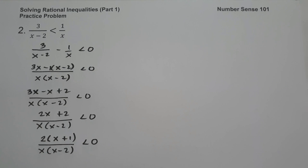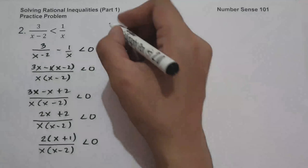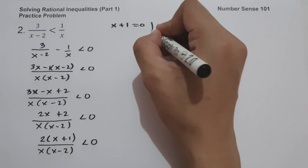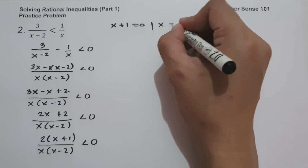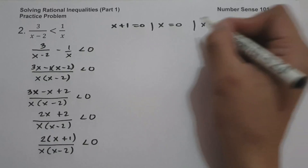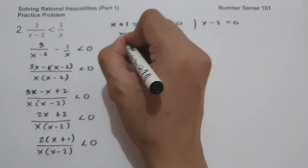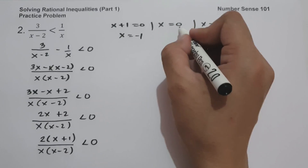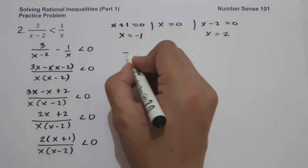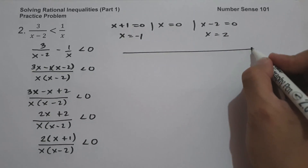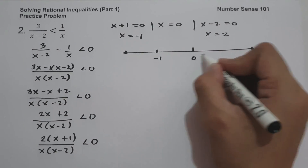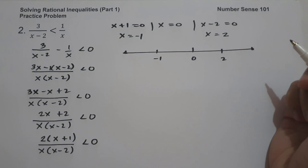The next step is to equate x plus 1 equal to 0, x equal to 0, and x minus 2 equal to 0. This gives x equals negative 1, x equals 0, and x equals positive 2. Let us draw a number line to check whether negative 1, 0, and 2 are part of our solution.